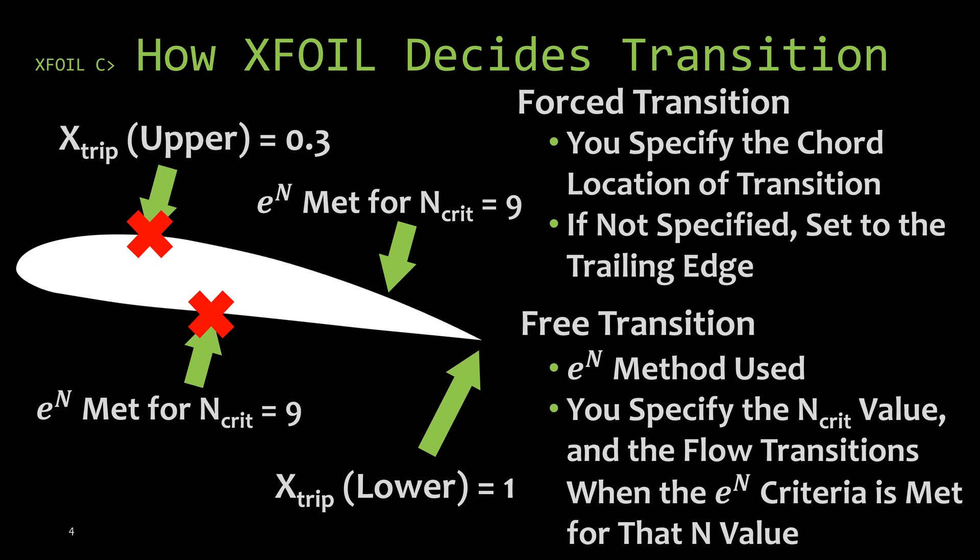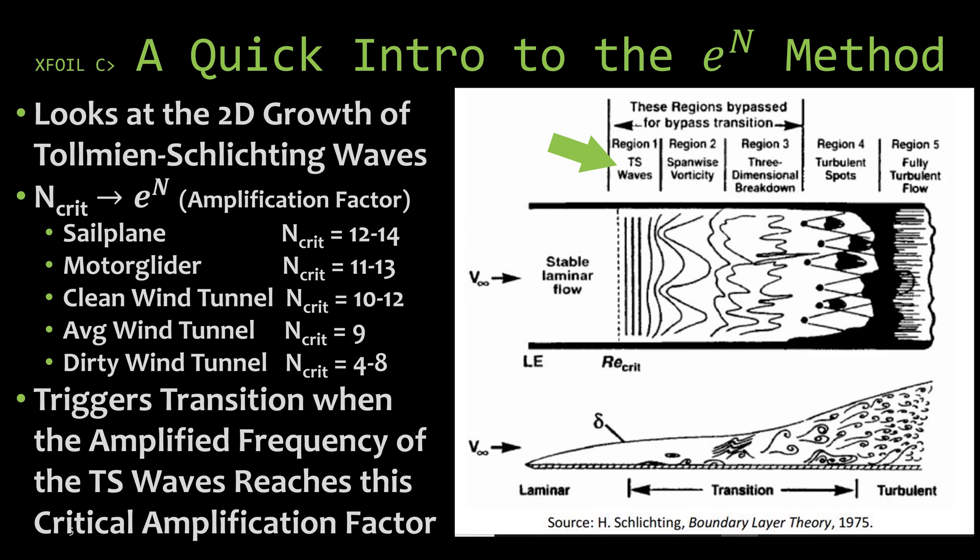I went ahead and marked with red Xs where it would actually trip based on where the two criteria are met. So let's have a quick introduction to the e to the n method. This is just going to be a brief introduction. I'll probably make another video in the future that is a deep dive into the specifics of how XFOIL uses this e to the n method.